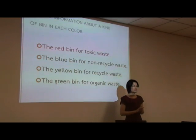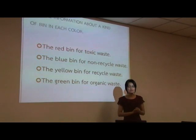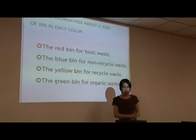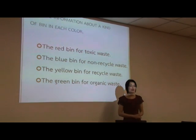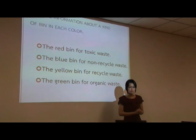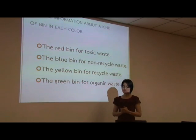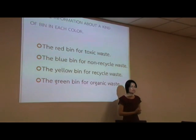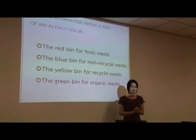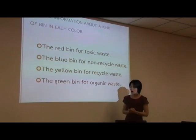For the information about the kind of bin in each color: the red bin is for toxic waste. For example, lamps, electric bulbs, dry cells, and colored cans, and so on.